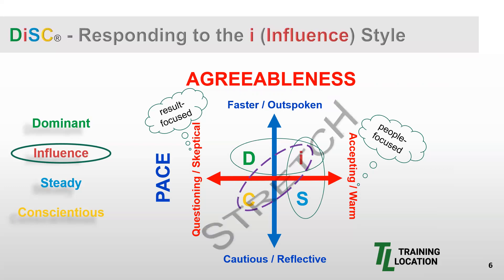With our focus on the I style: an I comes from a faster, outspoken pace combined with an accepting and warm agreeableness — people-focused. When the I needs to interact with the C, the first thing the I considers is that the C has a cautious and reflective pace combined with a questioning and skeptical agreeableness, or result-focused. This knowledge is all the I needs to prepare for successful interaction, though it will take a little more planning and effort. I call this the stretch — one style will have to stretch or flex a little to speak the language of another style, always considering the other's needs and priorities.